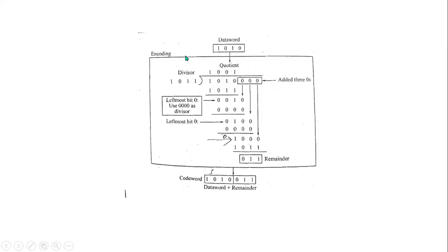In CRC there are two types: encoder and decoder. In the encoder, you mention the divisor and the data word. If the divisor has 4 digits, then 4 minus 1 equals 3, and we add three zeros. In the default quotient of 1, we mention the divisor, start the sum, and add one.